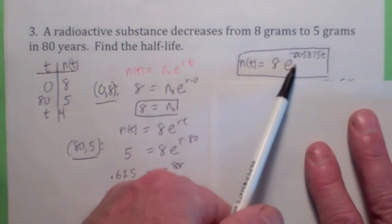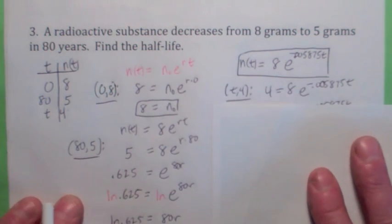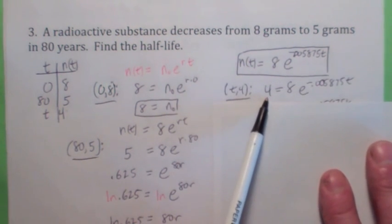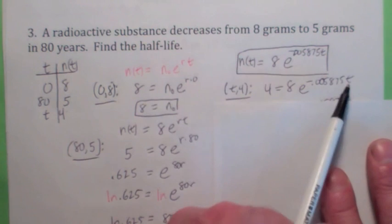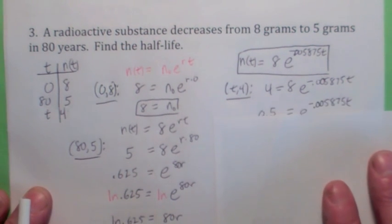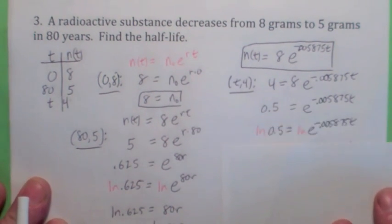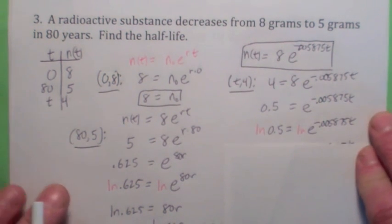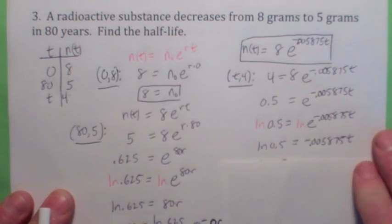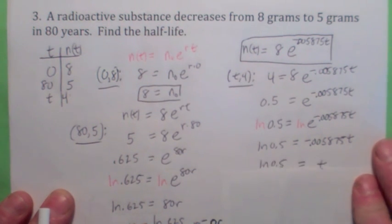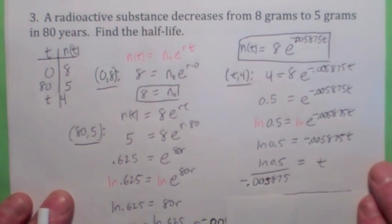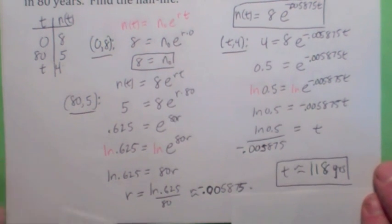Now to find the half-life, set the amount equal to 4 — which is half the initial amount — and solve for t. Divide by 8, take the natural log of both sides. The right side is just negative 0.005875t. Dividing by the coefficient of t gives t equals about 118 years. That's consistent with the estimate that it would be a little over 100 years.